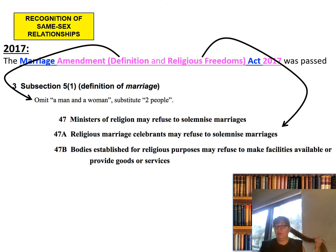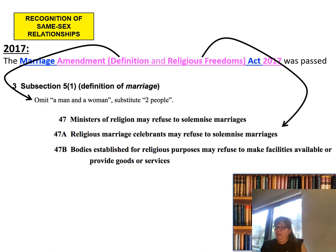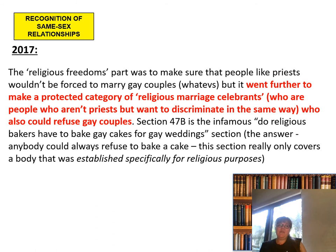When you think about the Sex Discrimination Acts that exist in this country, if you are using someone's sexual preference as the basis to say no, they're already covered. The religious freedoms part was to make sure that priests wouldn't be forced to marry gay couples. But it went further to create a protected category of religious marriage celebrants who could also refuse gay couples. Section 47B is the infamous 'do religious bakers have to bake gay cakes for gay weddings' section. The answer: anybody could always refuse to bake a cake — this section really only covers a body established specifically for religious purposes.